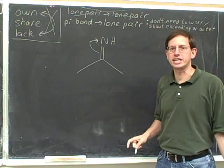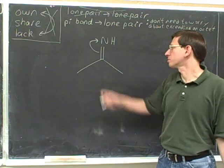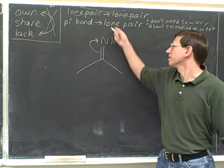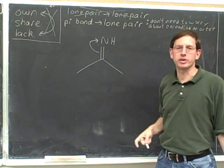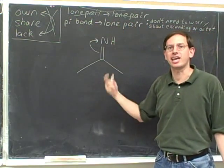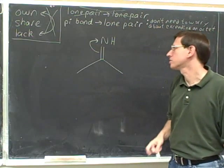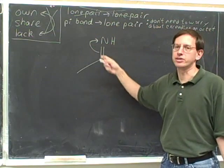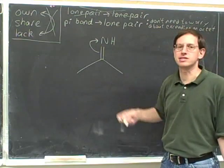Do we need to worry about exceeding an octet here? Notice we're forming a lone pair — there's no need to worry that a lone pair is going to exceed an octet. A pi bond to lone pair transition can't possibly exceed an octet, so we already know that this is going to be a perfectly legal electron pushing arrow.